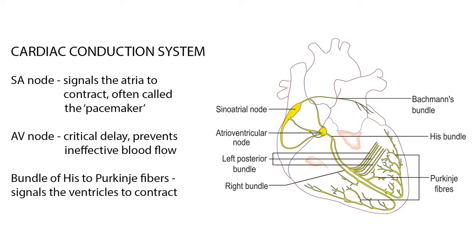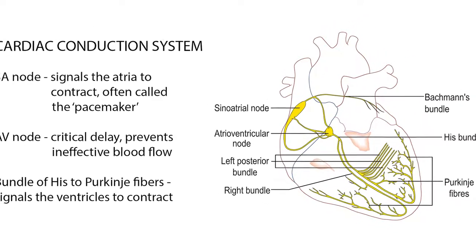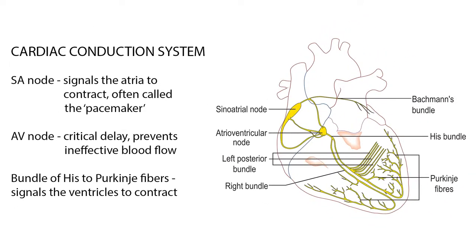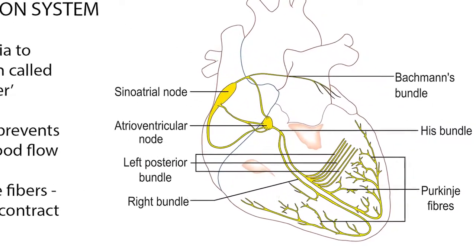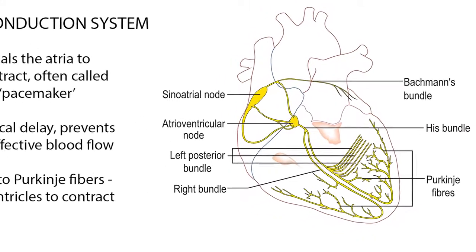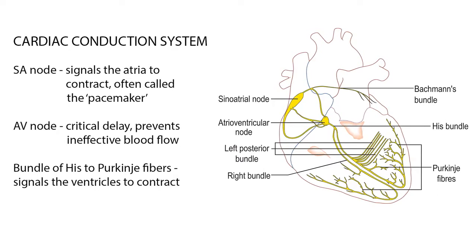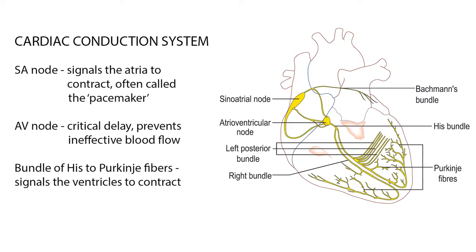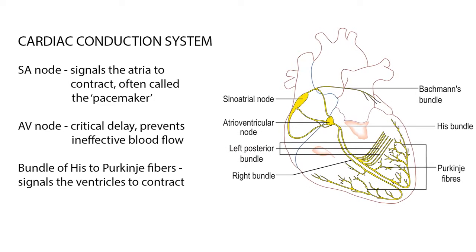The heart's ability to beat all starts in the sinoatrial or SA node, which is a small mass of specialized tissue located in the atria. Depolarization or activation of the cardiac muscle is initiated by an impulse from the SA node. The impulse spreads through the right atrium and through Bachmann's bundle to activate the left atrium. The electrical stimulus generated by the SA node occurs 60 to 100 times per minute under normal conditions. Therefore, the SA node is often called the natural pacemaker of the heart, and a normal heart rhythm is called a sinus rhythm.